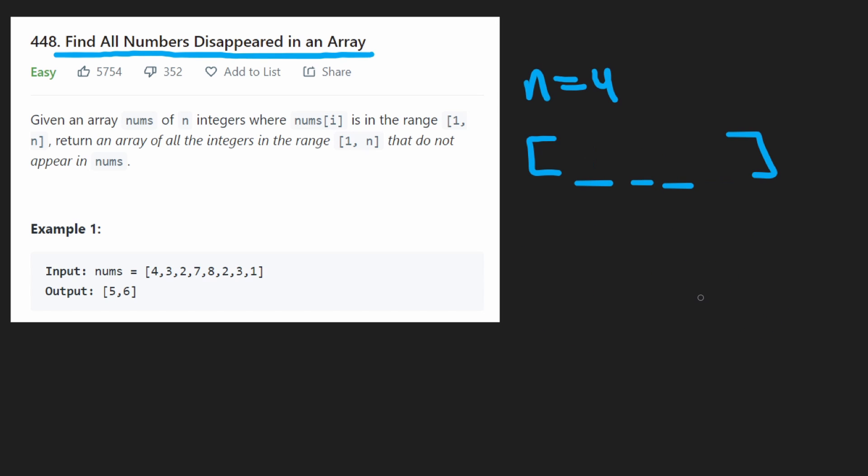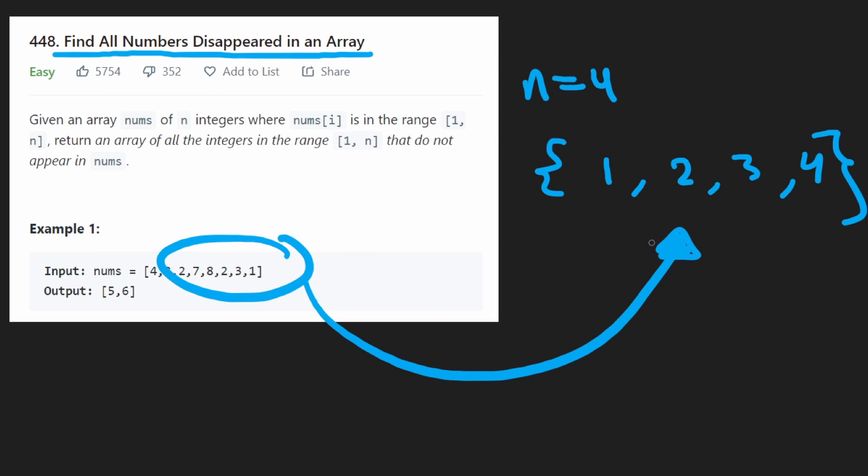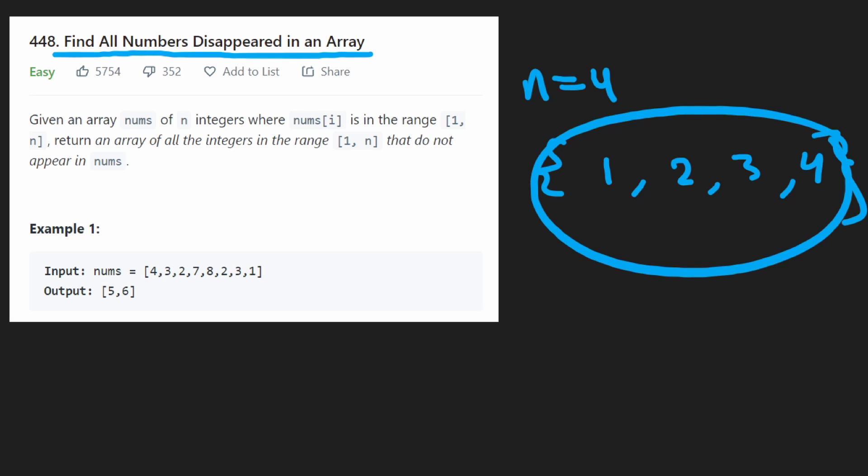So the easiest way to solve this problem, obviously, we want to first get every number in the range 1 through n. So we would want to have 1, 2, 3, 4. And then we'd want to actually iterate through the input array, whatever it happens to be, and then check, do those values exist in the range? If they do exist in the range, then from our data structure, we would remove them.